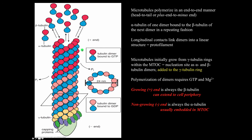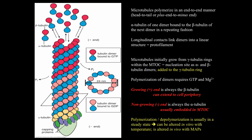The growing end of microtubules is always the beta tubulin at the plus end of the protofilament, and these extend towards the cell periphery. The non-growing end is at the minus end, which is typically embedded within the microtubular organizing center. Polymerization and depolymerization are usually in a steady state, which can be altered by temperature in vitro. In living cells, microtubule-associated proteins can change the rate of polymerization and depolymerization.